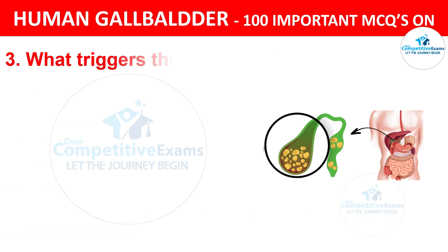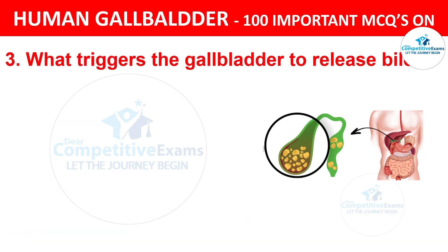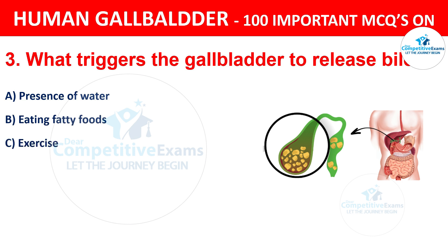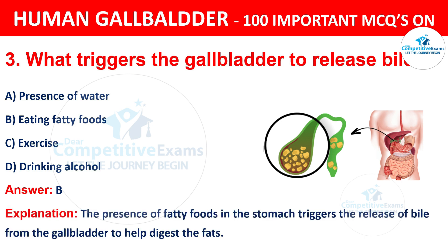Question 3: What triggers the gallbladder to release bile? Your options are: A) Presence of water, B) Eating fatty foods, C) Exercise, D) Drinking alcohol. The correct answer is B, i.e. eating fatty foods. The presence of fatty foods in the stomach triggers the release of bile from the gallbladder to help digest fats.